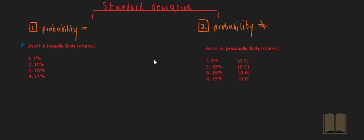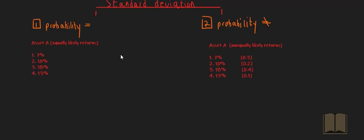In this example, we've got asset A. Asset A can give you the following returns: 7%, 10%, 18%, or 13%. All of these returns are equally likely to occur. We can now work out the expected return as follows. The expected return of asset A is the addition of all the possible returns. Since these are all equally likely to occur, we divide by the number of data points, which is 4. So that gives you 48% divided by 4, which gives you an expected return of 12%.